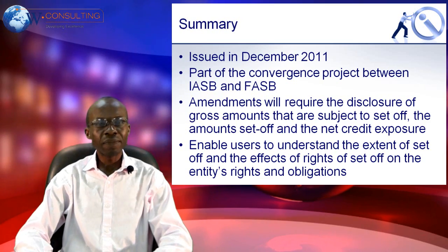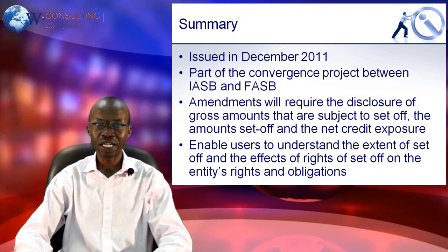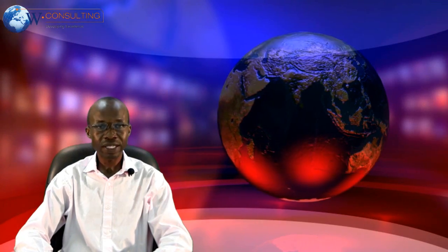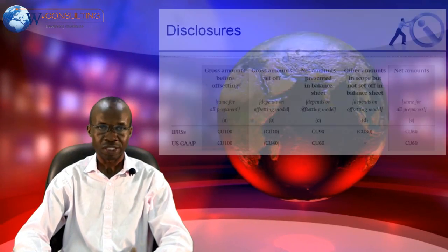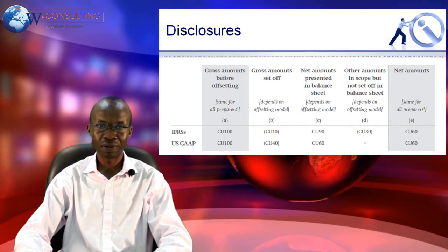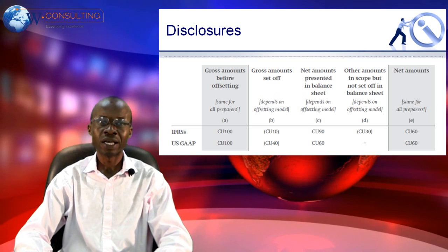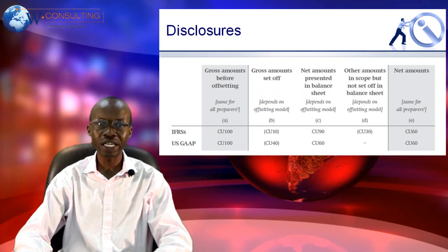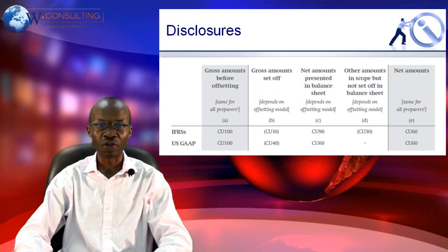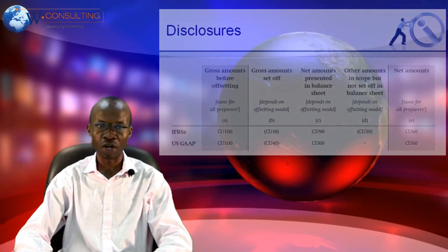The amendments that were made will require the disclosure of gross amounts that are subject to set-off, the amounts that are actually set-off, and the net credit exposure resulting. The whole point behind this is to enable users to understand the extent of set-off and the effects of the rights of set-off on an entity's rights and obligations.